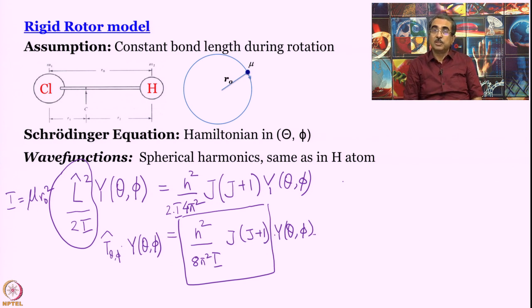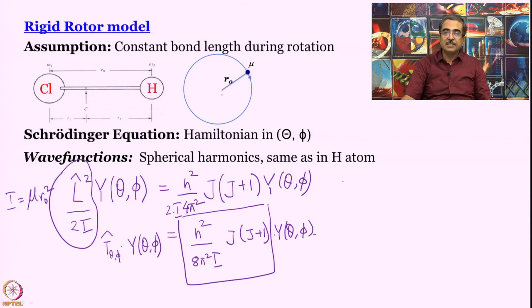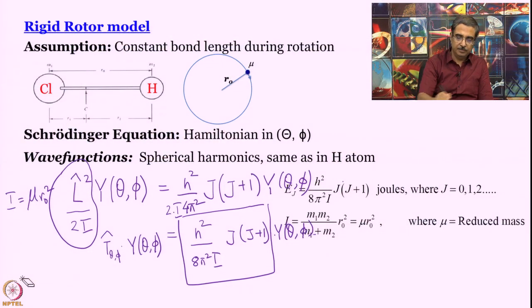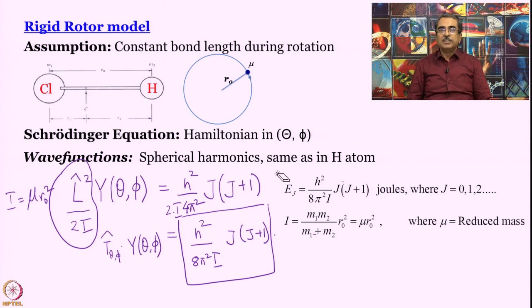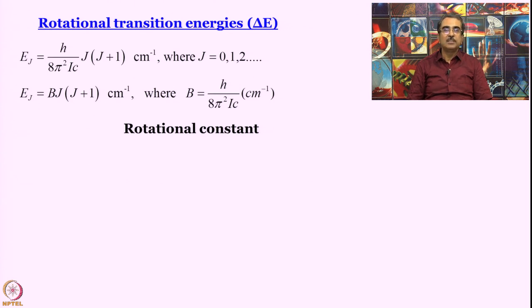Is there a potential energy for the rigid rotor? No, because we have defined it as a one-body problem — a mass going around a massless, chargeless center. If the center does not have any mass or charge, there is no potential energy that can arise. The energy of a rigid rotor is purely kinetic energy. So the expression is: E_J = h²/(8π²I) × J(J+1), in joules.